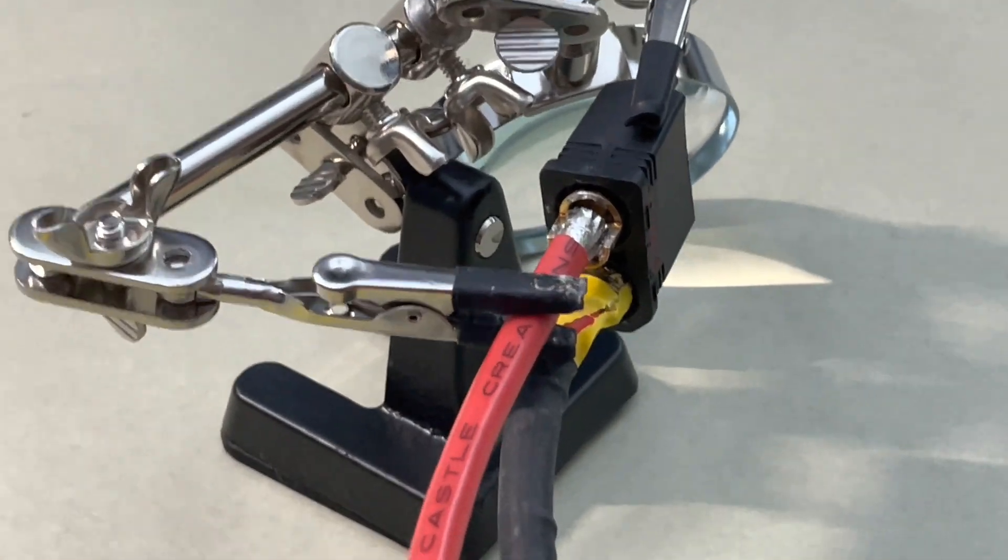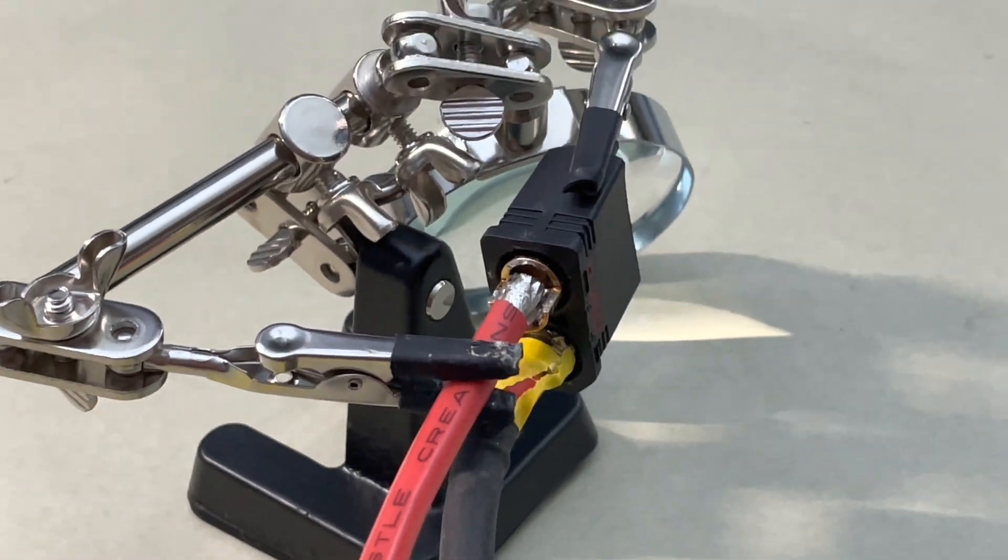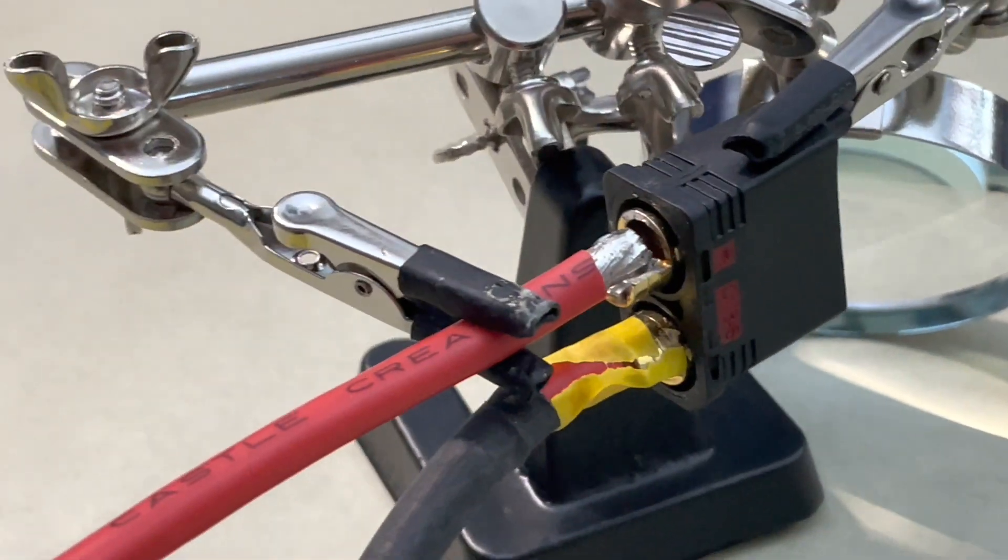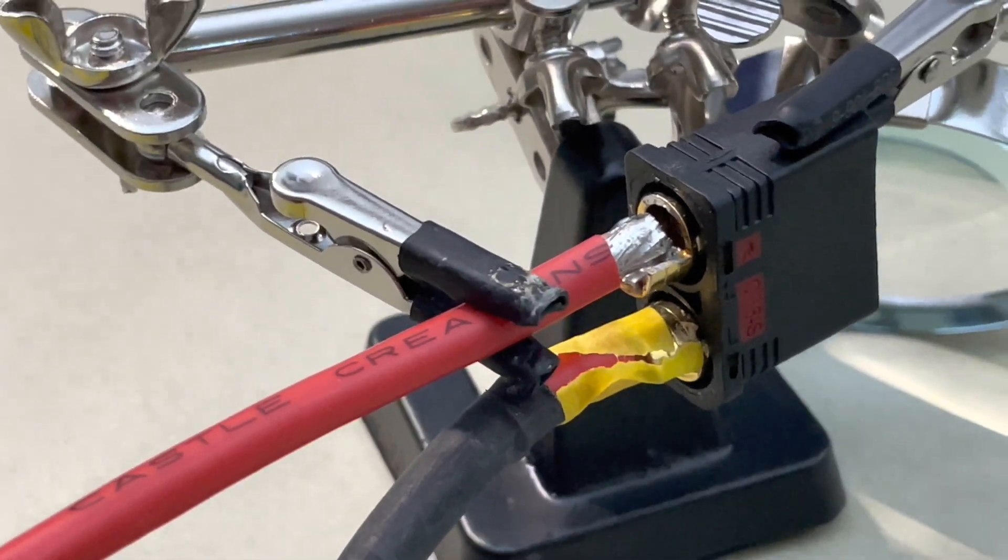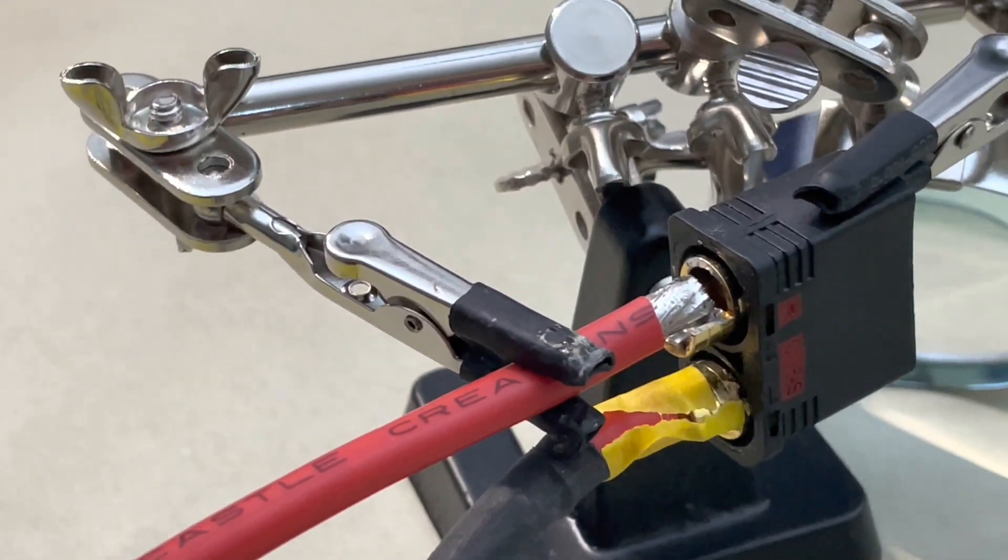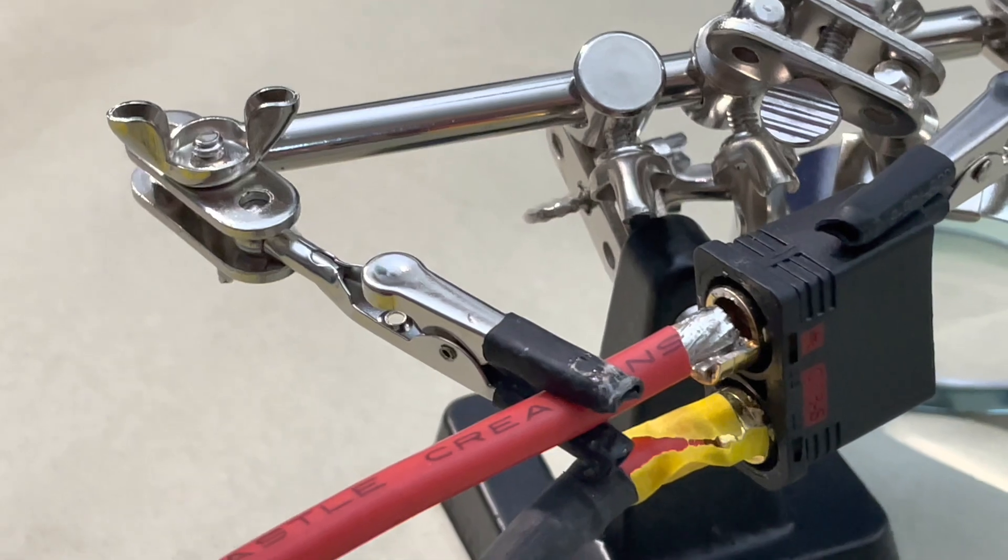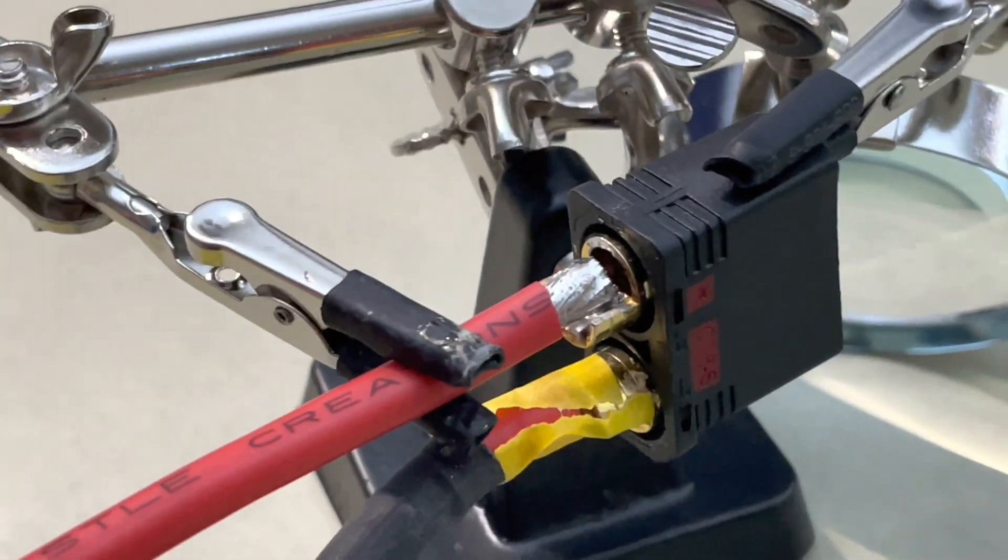Now, soldering wires on for the first time is a lot easier than desoldering because when you go to desolder, you have the most amount of solder all at once and you have the metal from the wires and the metal from the soldering point that are going to be pulling heat from the solder at the same time.